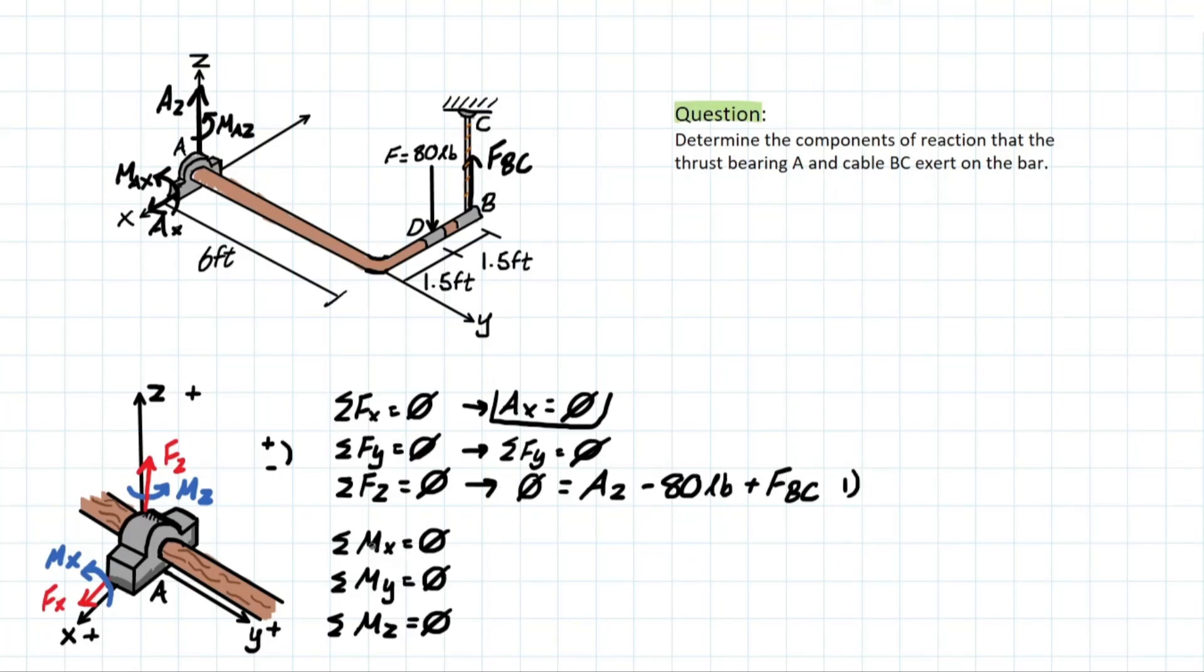Now we can start talking about the moment. We have Max, right? And we have these forces creating a moment with respect to this bearing. So how is this going to look? We have zero equals what? MAx. What's our convention? We see that with respect to this axis, we're going in the counterclockwise direction. So that means that the sign is going to be positive.